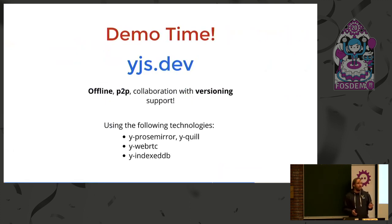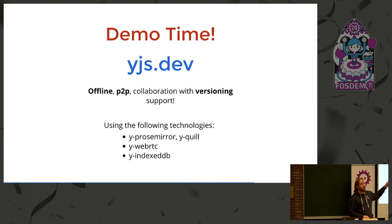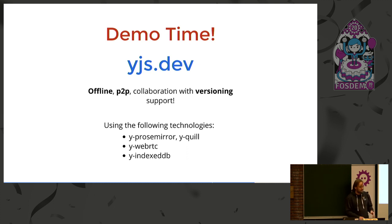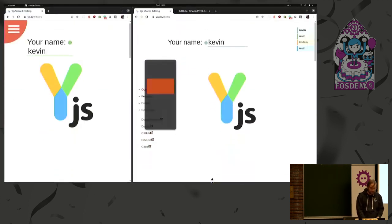Now it's demo time. I invite you to go on yjs.dev — I'd be really happy if a lot of people showed up so we could try out this peer-to-peer application with a lot of browsers and mobile devices here. The FOSDEM network is not the most reliable, but even if a lot of connections break, the WebRTC network is kind of fault tolerant, so I think it might work.